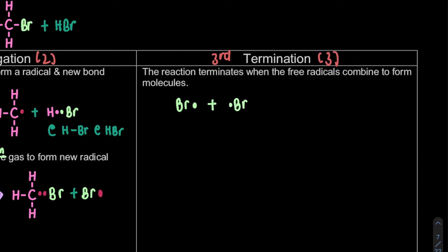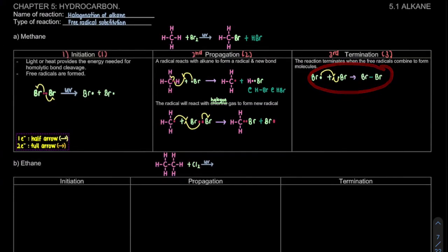Show where they meet - curve arrow, half-headed, curve arrow, half-headed - and then show the product: Br-Br bond. That is the first termination step using the radicals we found from the initiation step.